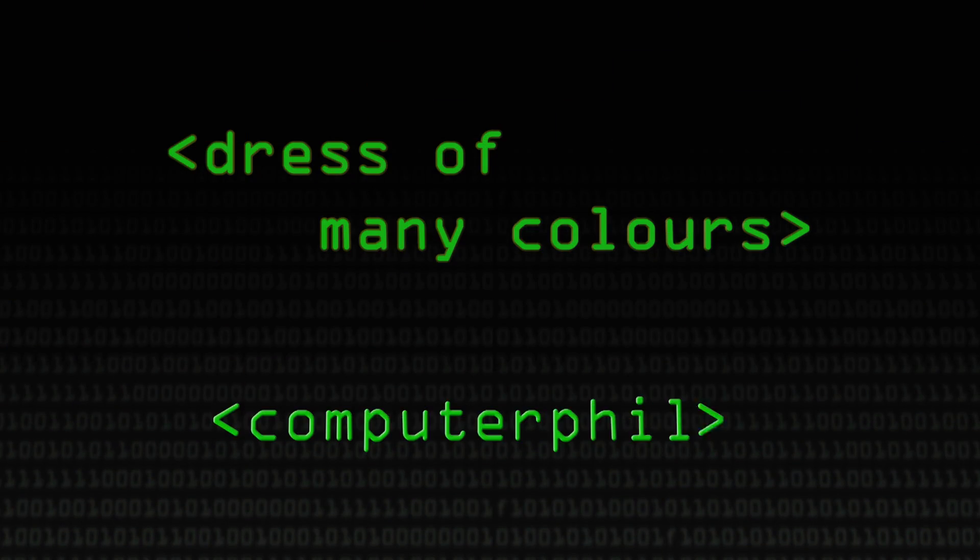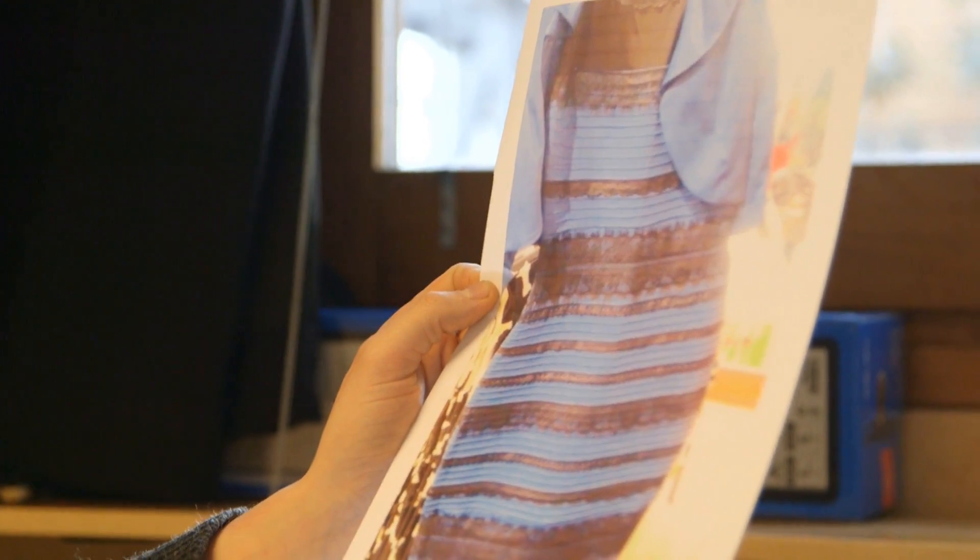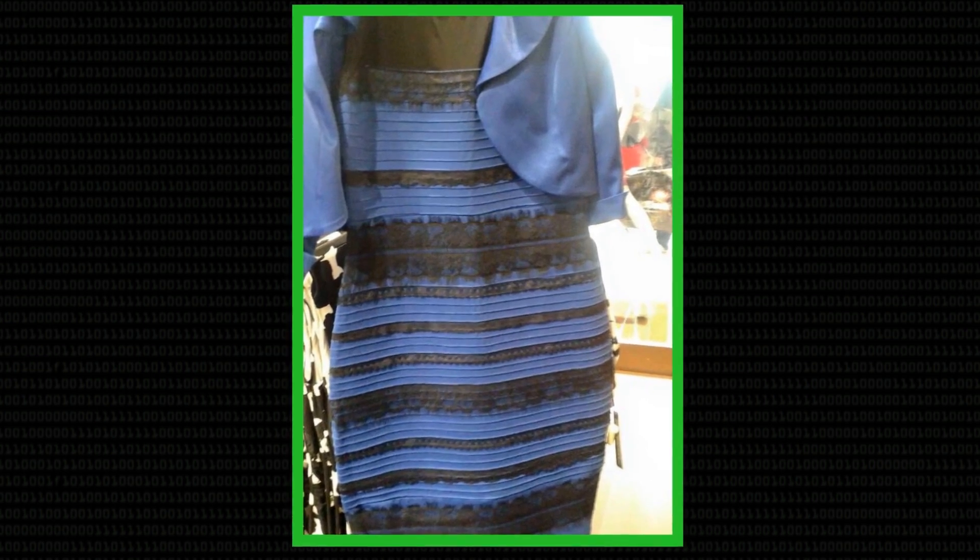There are two things we can do: we can actually read the pixel values and find out exactly what color this particular image is, and we can also have a look at the neurology behind why people see this differently. Not to critique too strongly, but this is not a great photograph — there are a few problems with white balance and with exposure, and that's probably one of the reasons it's causing so much of a problem. We're presented with this image and we make a decision as to what kind of scene we're looking at, evaluating the ambient lighting condition, and then using that to work out what color the actual object is.